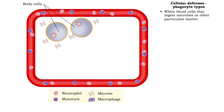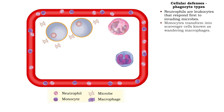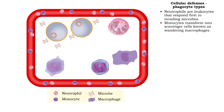Phagocytes are white blood cells that ingest microbes or other particulate matter. The two major types of phagocytes are neutrophils and macrophages. Neutrophils are granular leukocytes that are the first to respond to invading microbes. Phagocytes quickly follow, transforming into scavenger cells known as wandering macrophages.